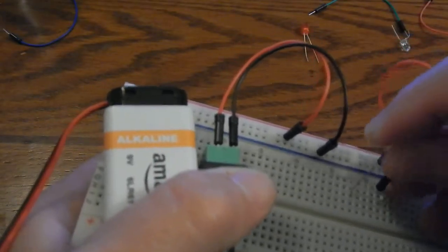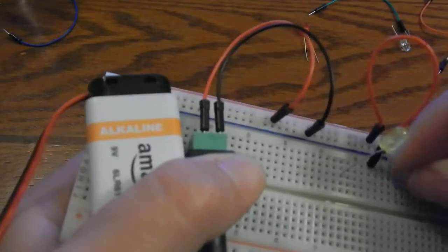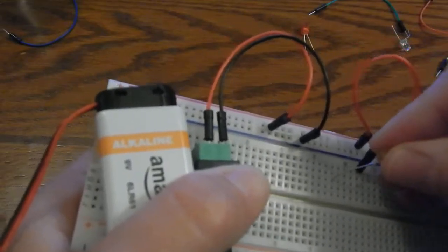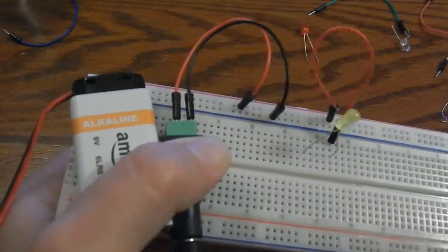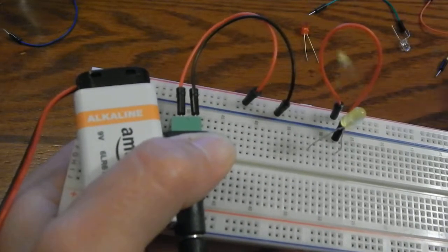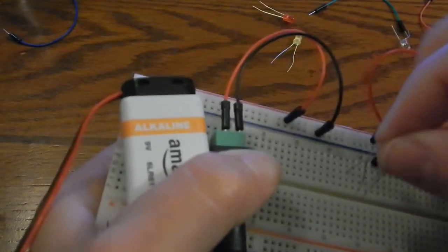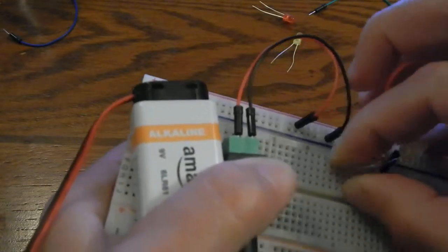leg of the light into the same column as the power, and this time I'll put the resistor on the other end of the leg. So this time I have the light before the resistor, but the resistor is still